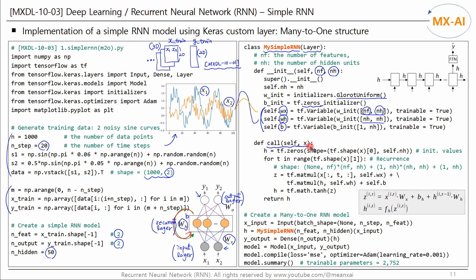Next, we write the call method, which takes data X as input. If we unfold this network over 20 time steps, we get the corresponding figure. The output of each time step is H, an N by NH matrix, where N is the batch size and NH is the number of neurons in the recurrent layer. The output of the previous step is fed into the next step, and it is initialized to 0 since there is no previous step.